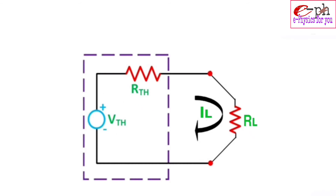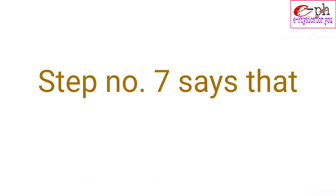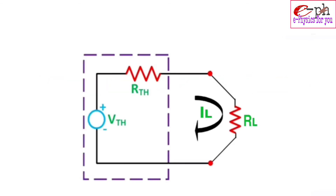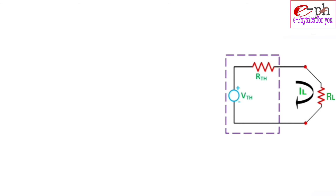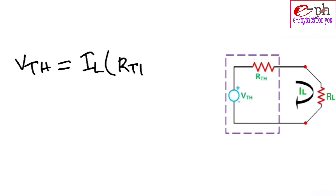Step 7 says to find the current flowing through the load resistance. Applying KVL in this equivalent circuit, we get Vth = IL × (Rth + RL). Therefore, the value of IL = Vth / (Rth + RL).